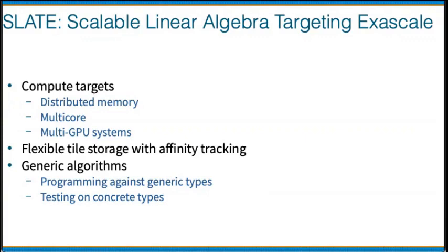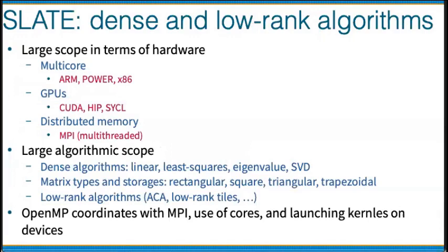SLATE also has support for generic algorithms, meaning generic data types are used throughout the code and then concretized into particular types for testing or in user code — for example, single precision floating point or double precision complex values. The algorithms supported include both dense and low-rank algorithms. In terms of hardware, SLATE supports ARM, IBM Power, and x86 processors from Intel or AMD, and GPUs via CUDA, HIP, and SYCL portability layers for NVIDIA, AMD, and Intel GPUs respectively. For distributed memory, SLATE supports MPI in multi-threaded mode.